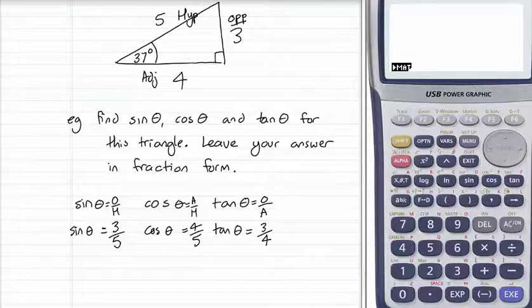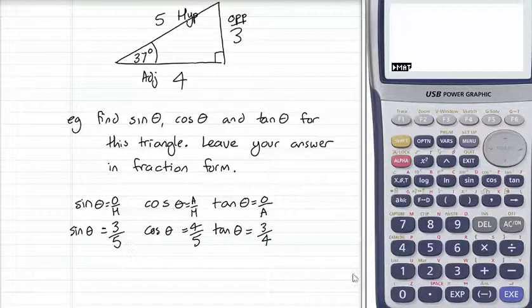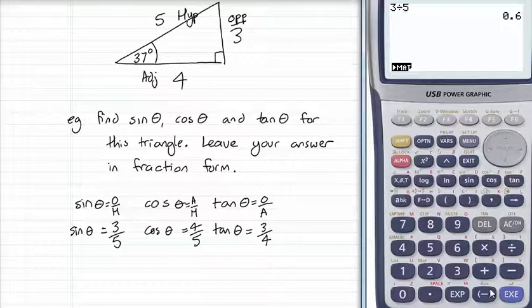If they'd asked me to give my answers as decimals, I'd just change my answer to a decimal. 3 over 5, 3 divided by 5, is 0.6. They didn't ask me for that, but if they'd asked me for the answer as a decimal, that's how I'd provide it.